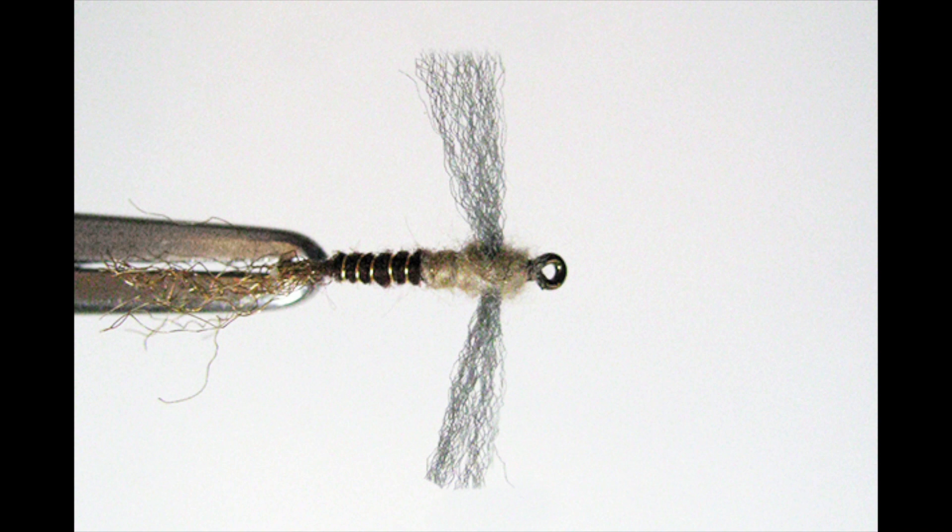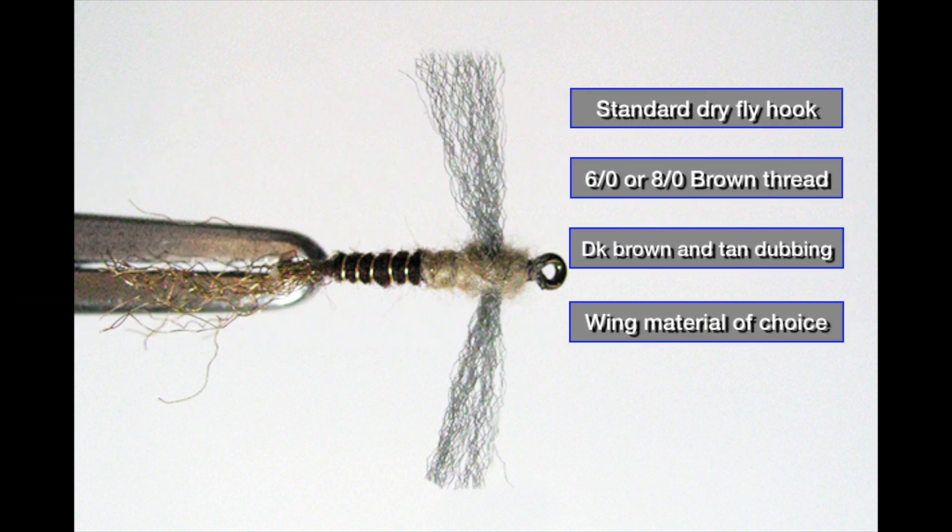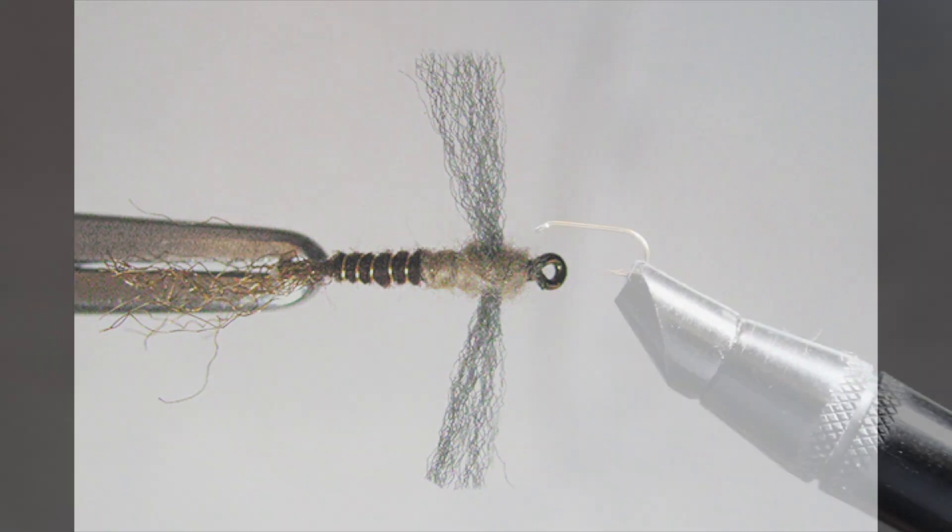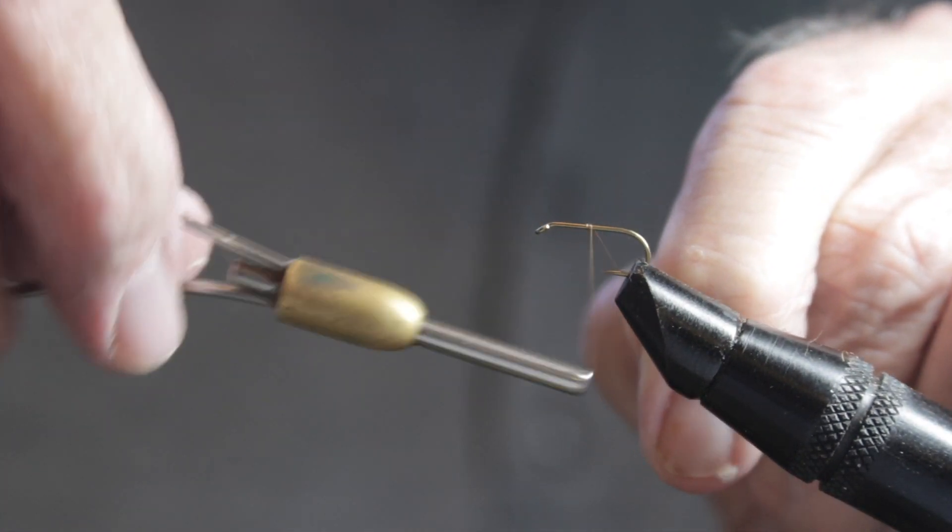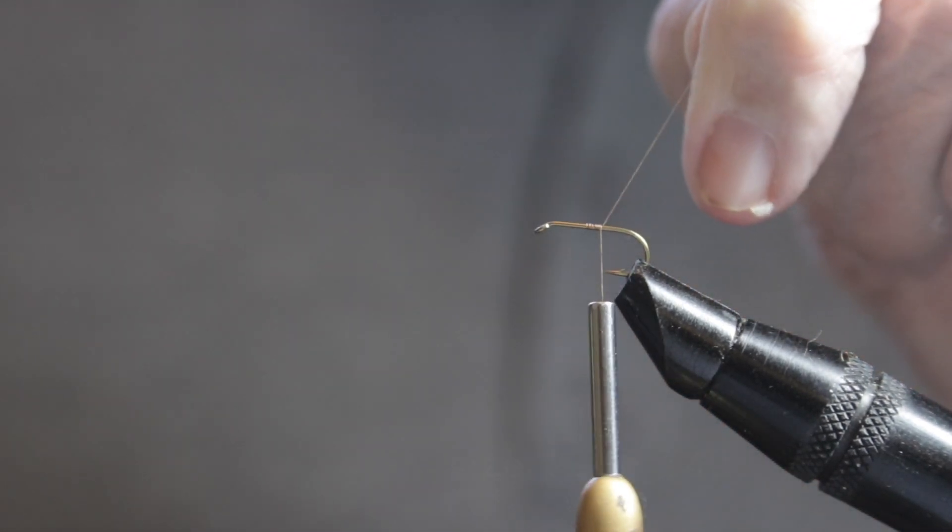Hi everyone, welcome to the channel or welcome back to the channel. Today we're talking about Hendricksons. They're right around the corner here in the Northeast. And we've got a pattern for you here. It's a Hendrickson cripple. It's tied with a shuck, tied with two body styles. One in the back which represents the nymph and the other that represents the dun. And a splint wing. So we'll start by getting our thread on the hook. We'll start at about the halfway point and work back toward the bend, cutting the tag end off of course.